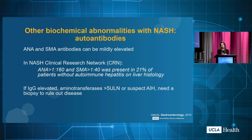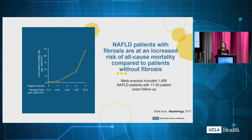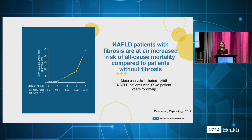One of the most important things you can do in clinic is accurately stage fibrosis, because NAFLD patients with fibrosis are at increased risk of not only all-cause mortality but specifically liver-related outcomes. A meta-analysis of about 17,000 patients showed that starting at stage 2 fibrosis, liver-related complications exponentially increase. There's really been a push to identify F2 patients and ensure they're followed in hepatology and gastroenterology clinics.